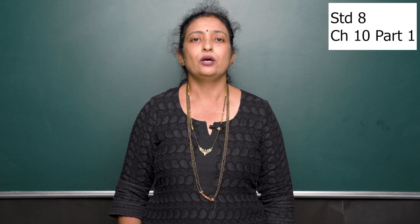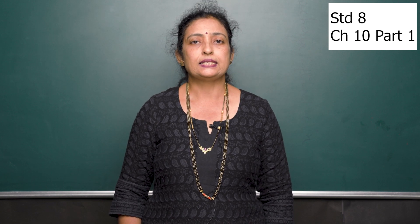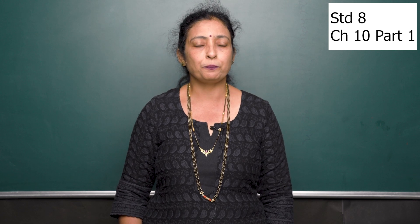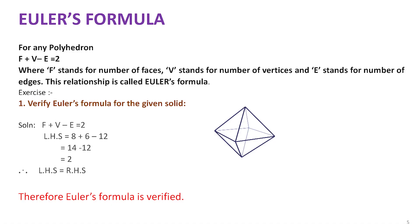Now let us learn Euler's formula. Euler's formula is true for every polyhedron. It states that for any polyhedron, F plus V minus E is equal to 2. In this formula, F represents the number of faces, V represents the number of vertices, and E represents the number of edges.